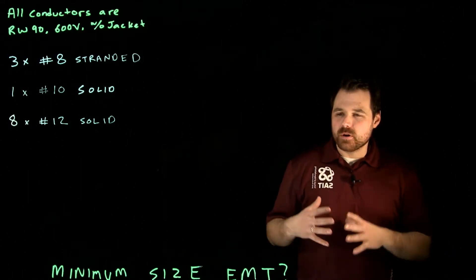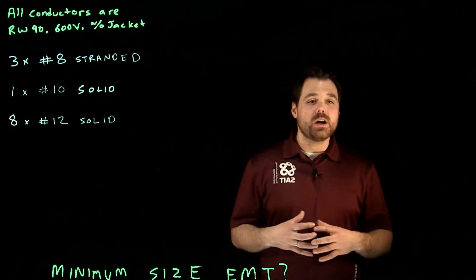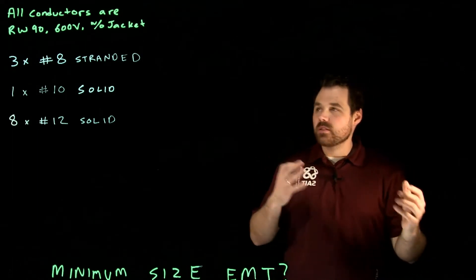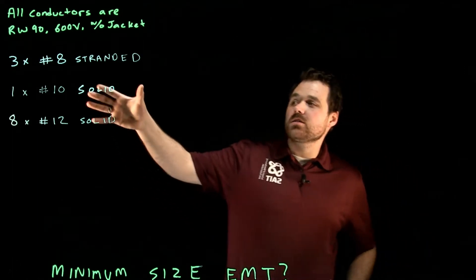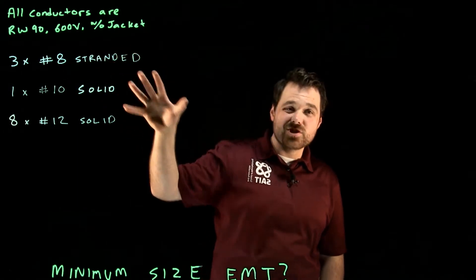Hi, welcome. I'm here to talk about an example of conduit sizing. So in this instance, we're pulling these conductors, all RW90, 600 volt without jacket.